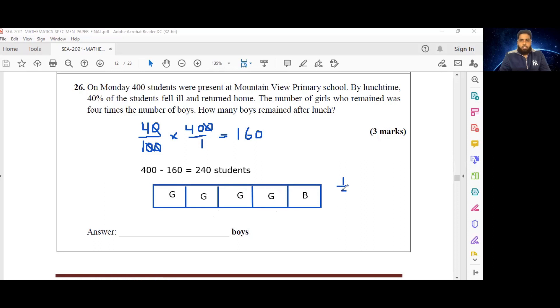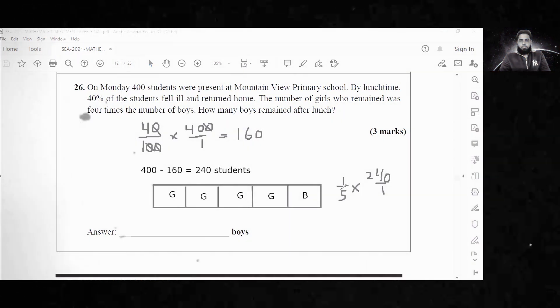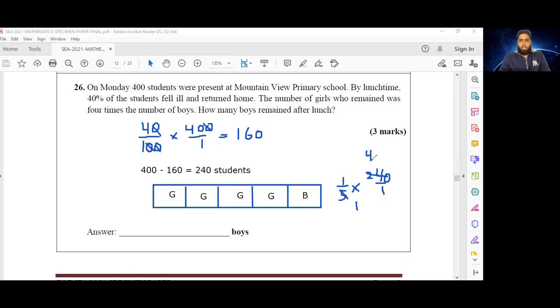One fifth of 240 should give me 48 boys. We have a total of 48 boys that remain after lunch.